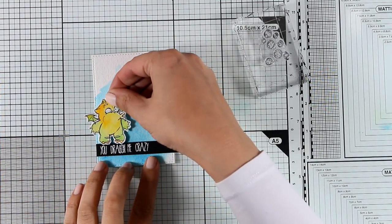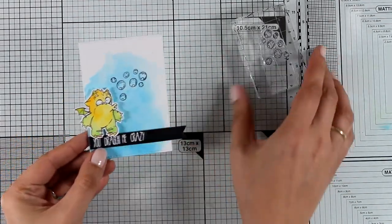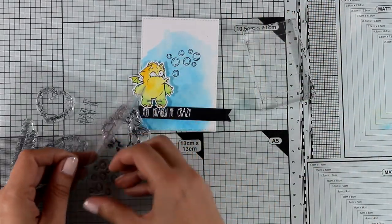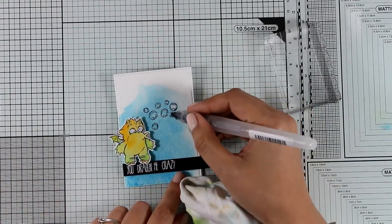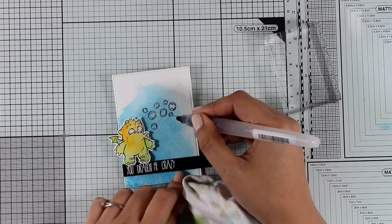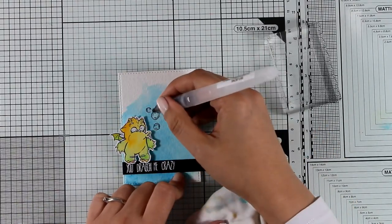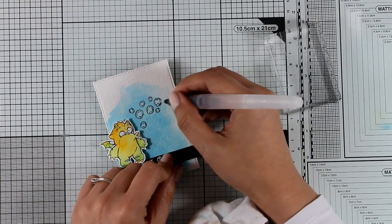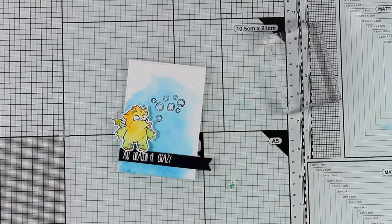Now for my sentiment I white embossed on black cardstock the sentiment that says 'you drag on me crazy.' I have cut it out in the shape of a banner and I'm going to place that on top of my panel. Now my panel is a scrap paper that I have from a previous project and that's actually Salty Ocean distress ink just smooshed all over the place. I also stamped the bubbles as if they are coming out from his mouth. Now I'm using my watercolor brush here to lift some of the color. This is actually distress oxide ink, it reacts with water and I can easily blot those bubbles so they look lighter than the background.